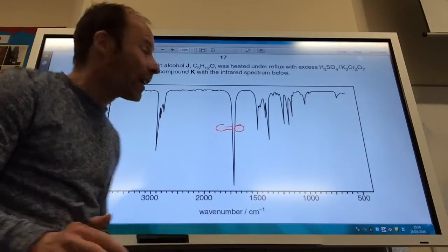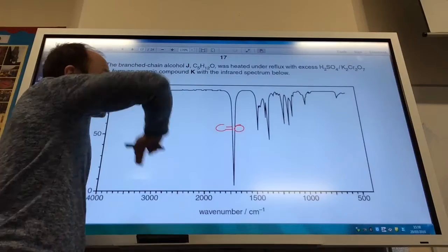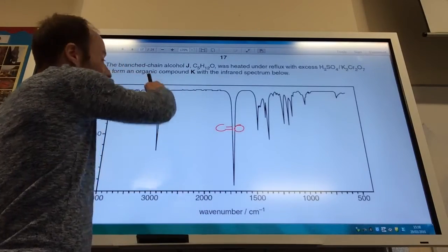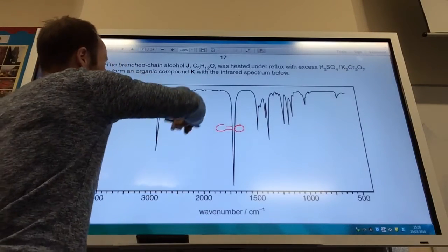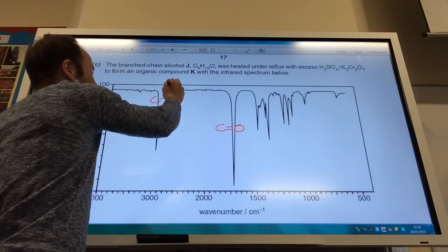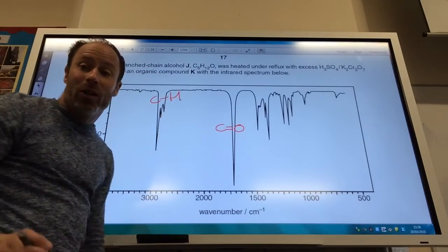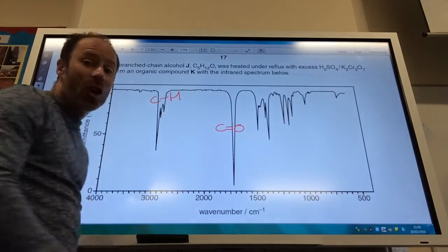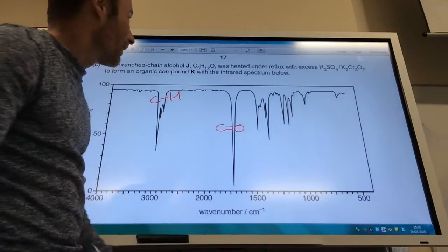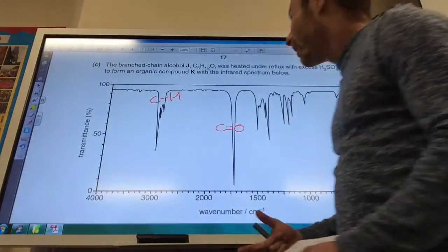Ketone or I've got a carboxylic acid. Is it a carboxylic acid? No, it can't be. This is not an OH. If it was OH from a carboxylic acid, it would be very broad. This is CH. Those are CH bonds there. So, what have I got? I've got a ketone, haven't I? Anyway, so, first of all.